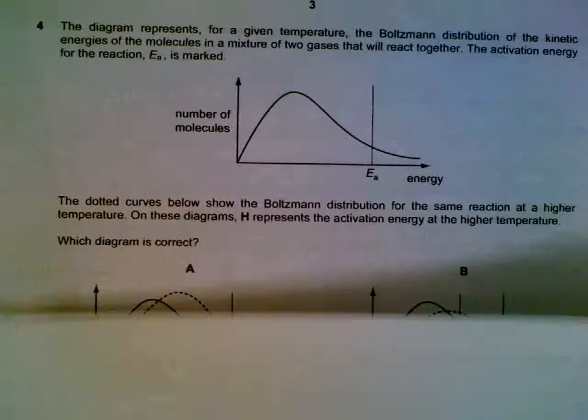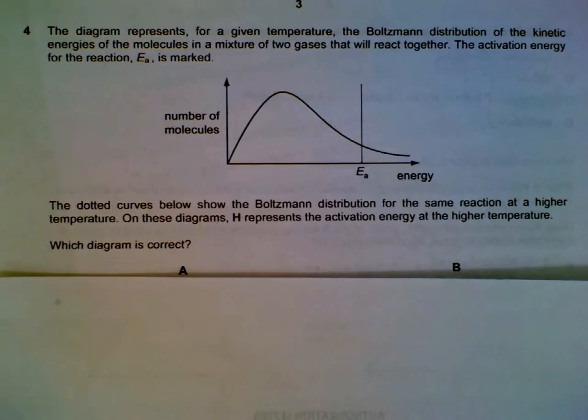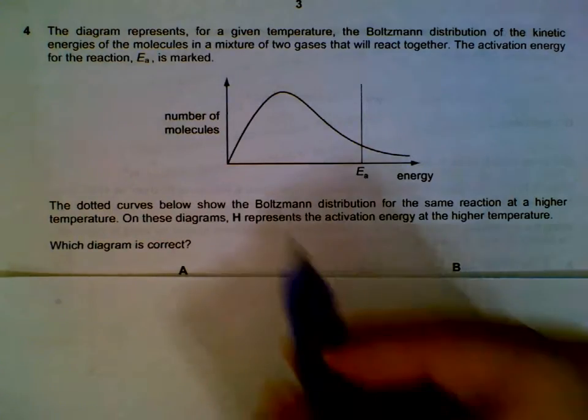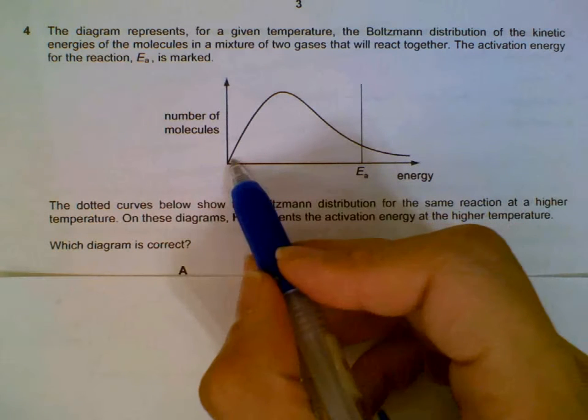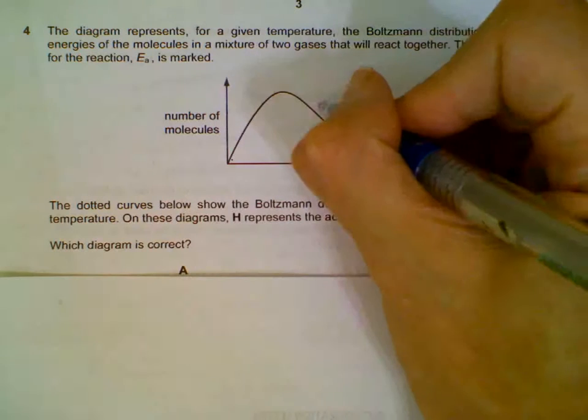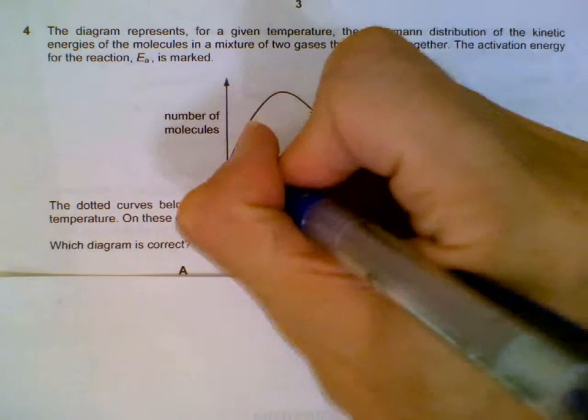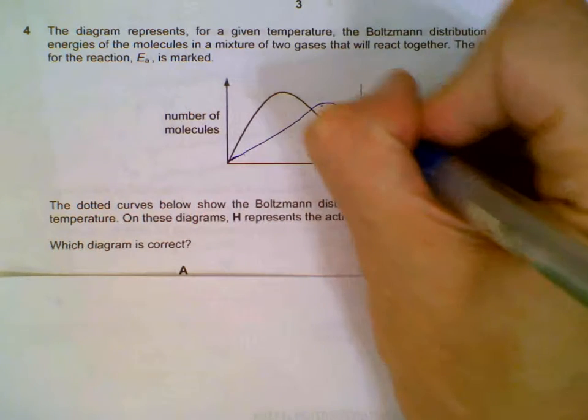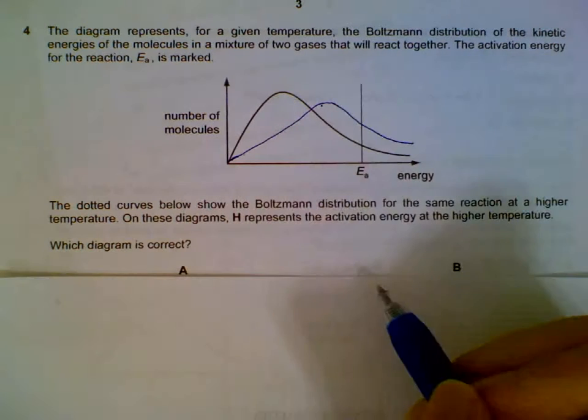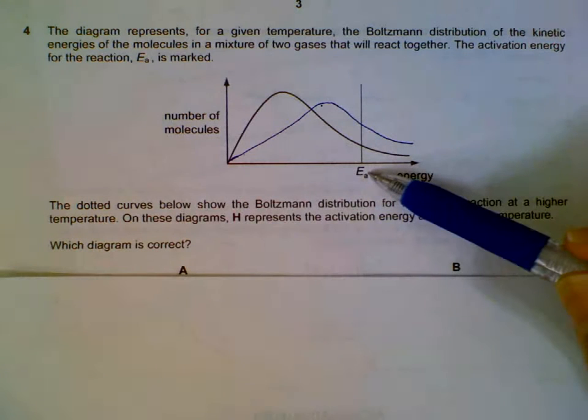Number four: Boltzmann distribution. What will happen when we have a higher temperature? Looking at this diagram, if we have a higher temperature, the peak will be lower and pushed towards the right side. We expect the higher temperature curve to look like this. Activation energy will not change due to the increase in temperature.